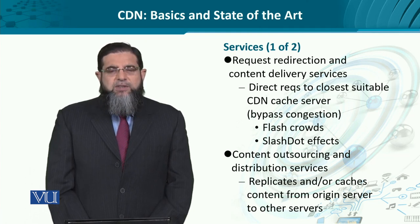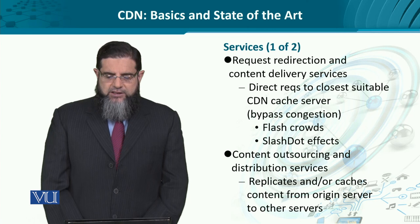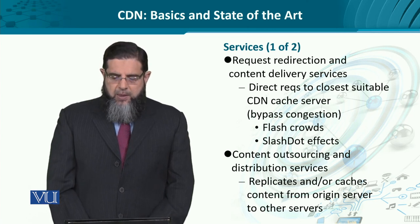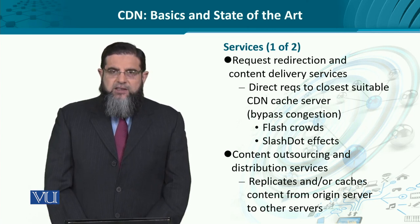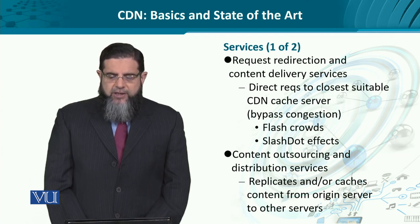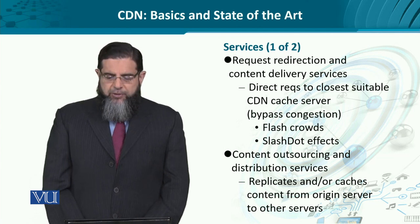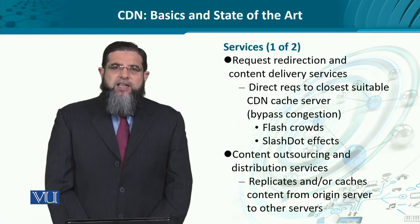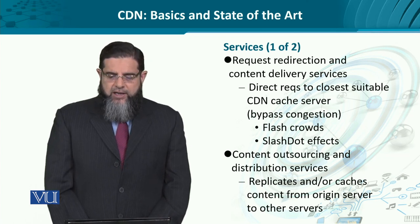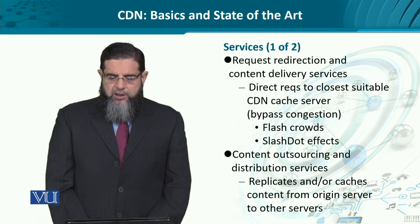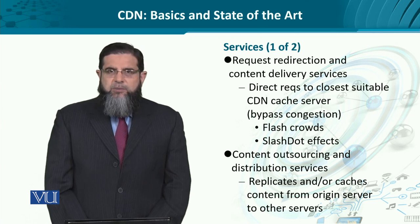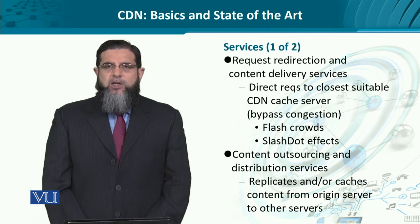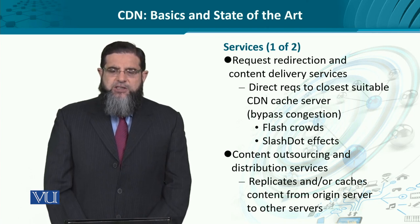The services that we could conceive for CDNs would be request direction and content delivery service. It means the requests from the users have to be directed to the most appropriate CDN server — the original CDN server or its cache server. Using this mechanism enables a content delivery network to avoid or bypass congestion.